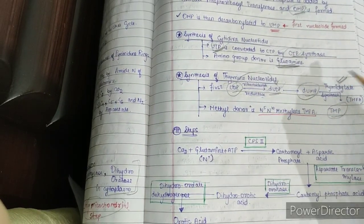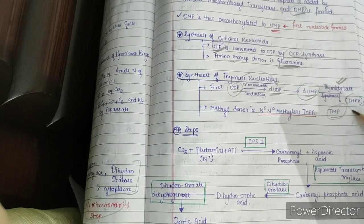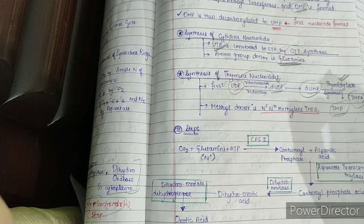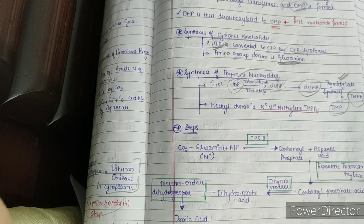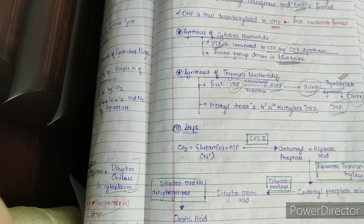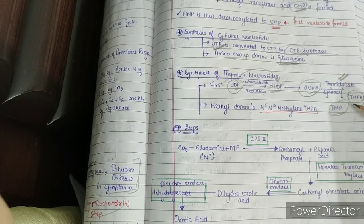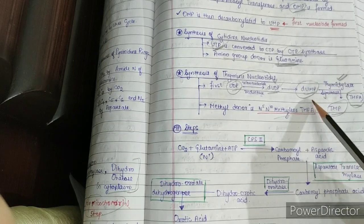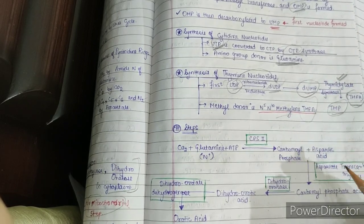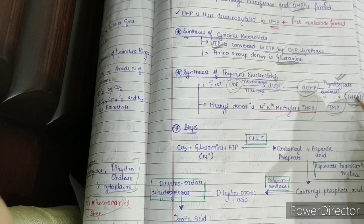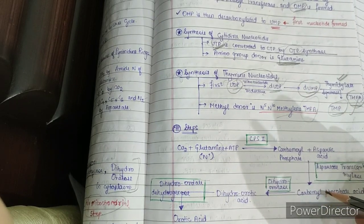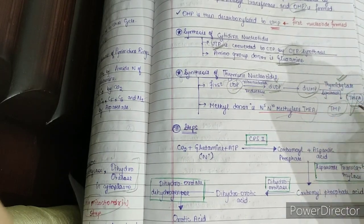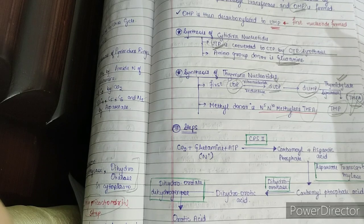Another important point in this reaction: the methyl donor is THFA (tetrahydrofolic acid), specifically N5,N10-methylene THFA. This is notable because generally SAM (S-adenosylmethionine) is the methyl donor in the body, but in this step THFA is the methyl donor. This is relevant because the drug methotrexate inhibits THFA formation, impacting this step and blocking TMP synthesis — so methotrexate can also be used as an anti-cancer drug.